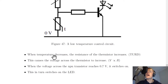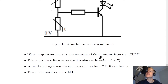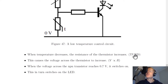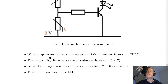The first step is to talk about what happens to the resistance of the thermistor as temperature decreases, because we're talking about a low temperature circuit. When temperature decreases, the resistance of the thermistor increases. We know that from our rule for thermistors, which was TURD: temperature up, resistance down. So as temperature goes up, resistance goes down. But here the opposite is true — temperature down, resistance up.